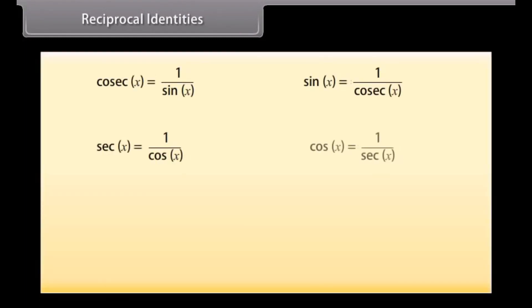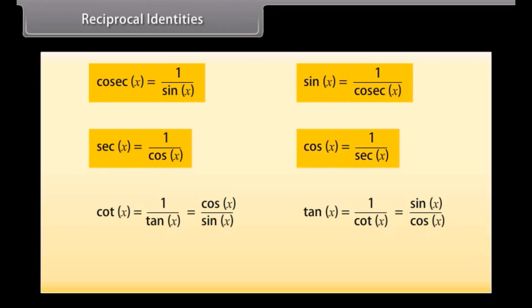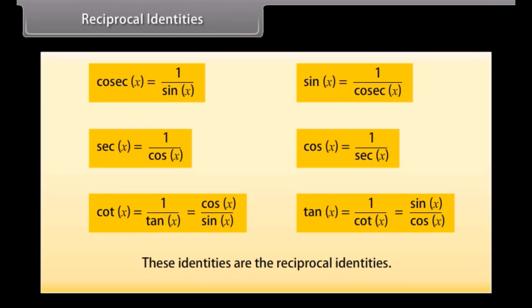Reciprocal identities: Look at these identities. csc X is equal to 1 over sin X; sin X is equal to 1 over csc X; sec X is equal to 1 over cos X; cos X is equal to 1 over sec X; cot X is equal to 1 over tan X, which equals cos X over sin X; and tan X is equal to 1 over cot X, which equals sin X over cos X. These identities are the reciprocal identities.